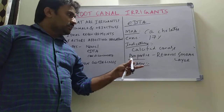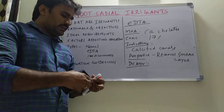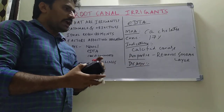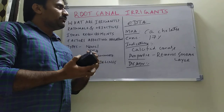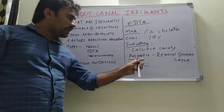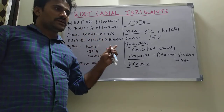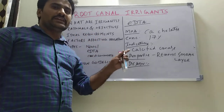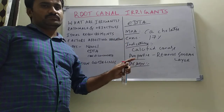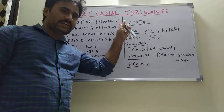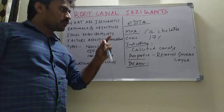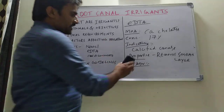The recommended irrigation regimen is: first instrument with 17% EDTA for one minute, followed by sodium hypochlorite irrigation. This is the generally recommended irrigation regimen — first irrigate with EDTA, then follow with sodium hypochlorite irrigation.